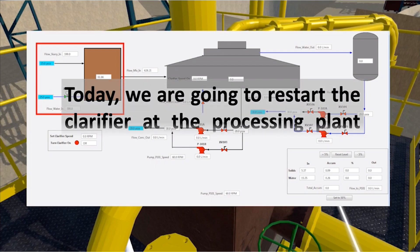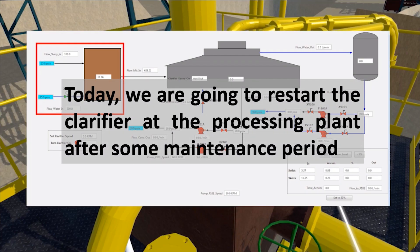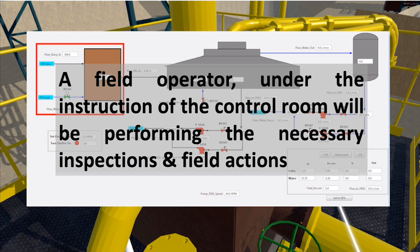This example is for a training simulator for a mining operation incorporating virtual reality and control system interaction. This enables tandem training for the inside control panel operator as well as the outside operator or field personnel. All operator moves are indicated on the control system to see the system responses and associated control action. This is just an example of the many types of operator training systems that we offer.